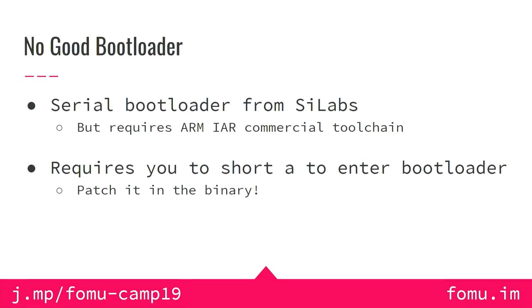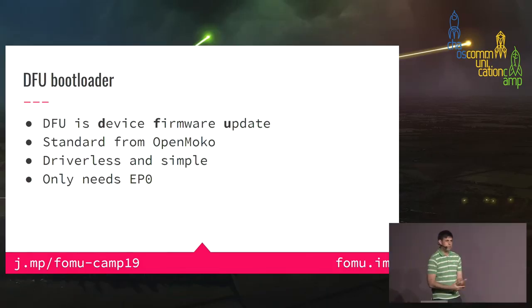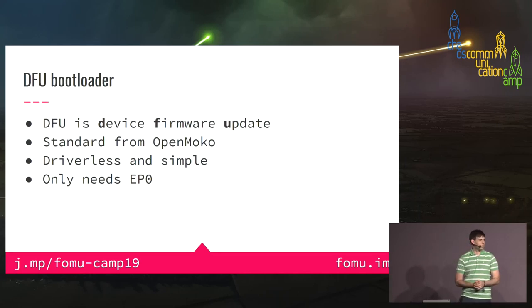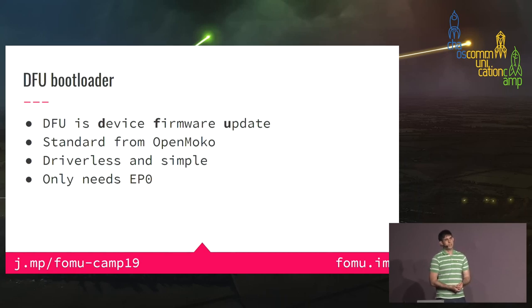The bootloader from Silicon Labs was a serial-based one that shows up as a serial device requiring a custom driver, only compiles under the ARM IAR commercial toolchain, and requires shorting a pin to ground when turning on — which is not doable when it's in your USB port. There was a binary patch turning a 'jump if not equal' into a 'jump always,' which you really can't ship a product with. So I decided to work on a DFU bootloader — Device Firmware Update — which is driverless, works on all platforms including Windows 10, and only needs endpoint zero.